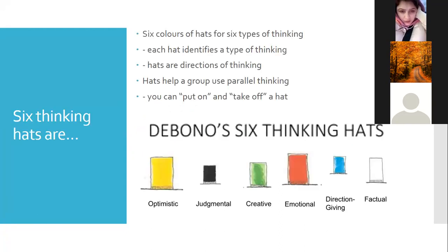The main idea: six hats are six different colors for six types of thinking, because people think in six different ways. Some people are more emotional, some are optimists, some are pessimists, some are creative, some just want to rule and control the process, and some are focused on data and information. These are different kinds of thinking, and the six hats activity takes all of them into consideration to help make decisions and plans.